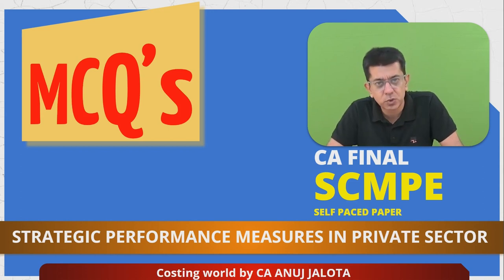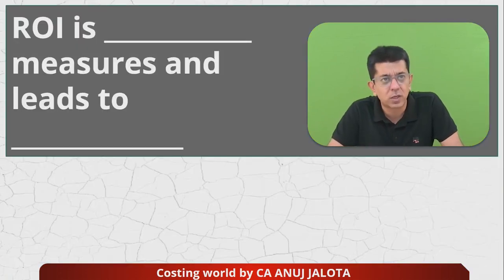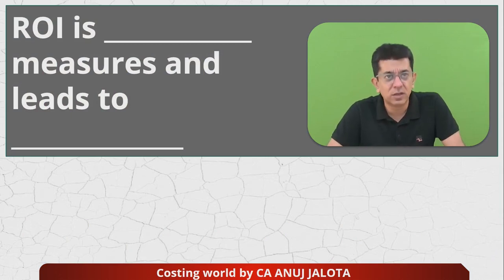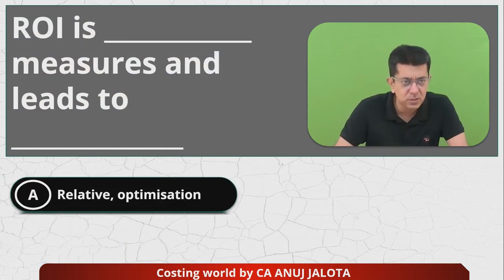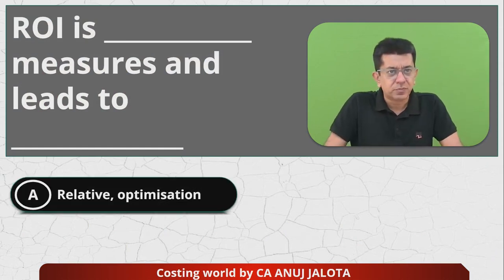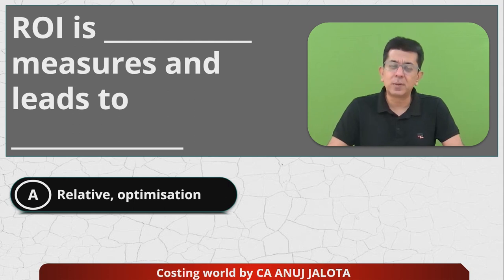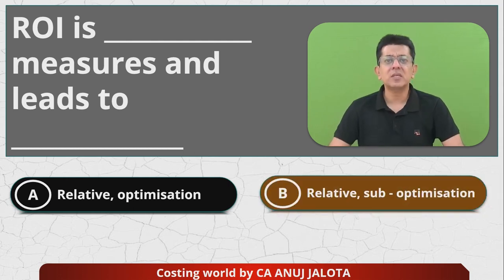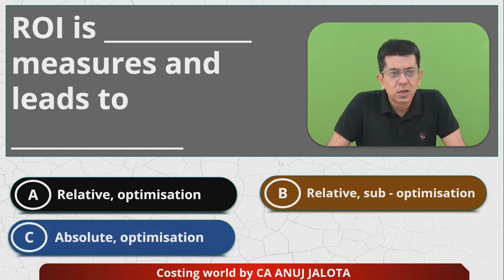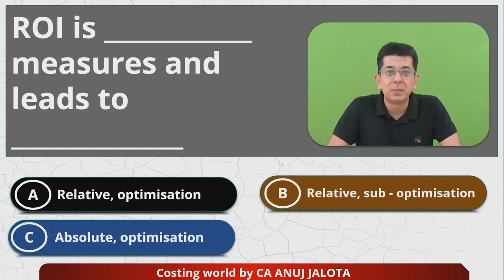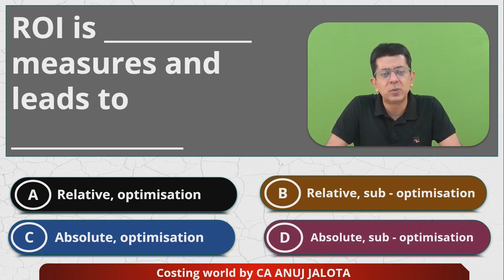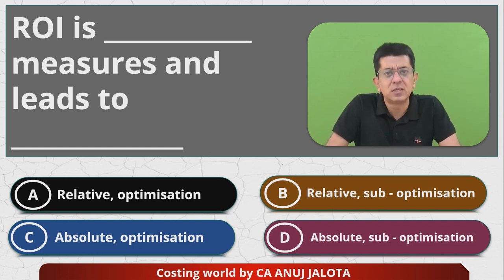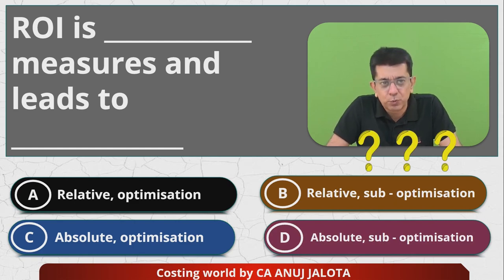Today's question is: ROI — Return on Investment — is a blank measure and leads to blank. The four options are: first, relative and optimization; second, relative and sub-optimization; third, absolute and optimization; fourth, absolute and sub-optimization. If you know the answer, this is the time to comment below with the correct one.